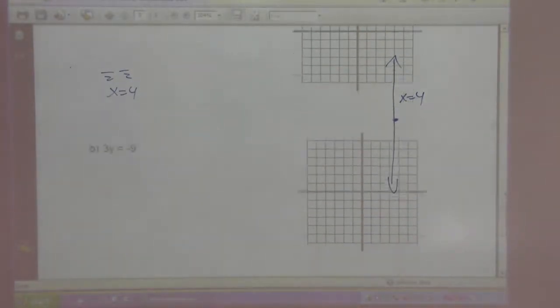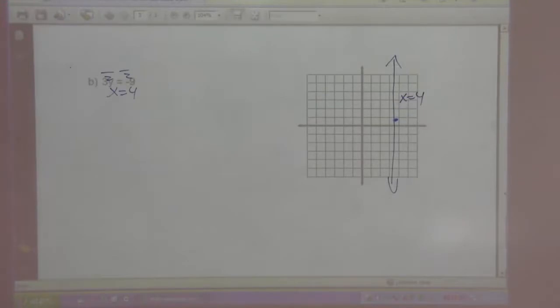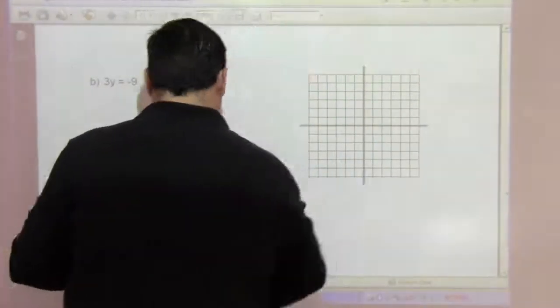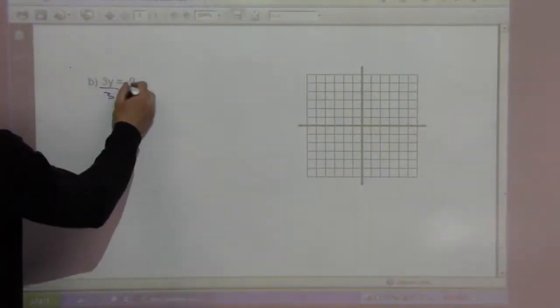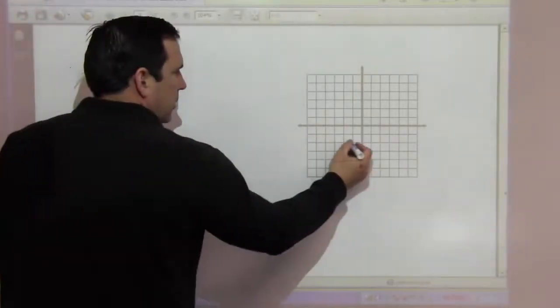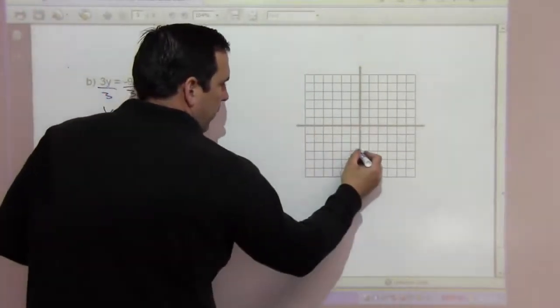I'm going to go to the next one, our last one for this section. 3y equals negative 9, divided by 3, y equals negative 3. So it's a horizontal line through negative 3.